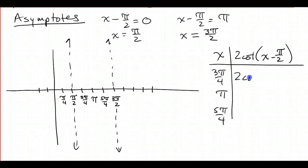So I've got 2 times the cotangent, 3 pi over 4 minus 2 pi over 4 is 1 pi over 4. I know the cotangent of pi over 4 is 1, so that's going to be 2.